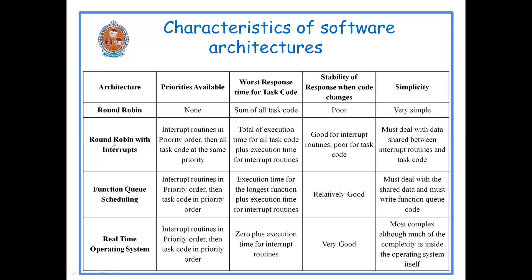In round robin with interrupts architecture, the worst case response time is the total execution time of all the task code plus the execution time for the interrupt routines. Whenever an interrupt occurs, it is a routine that must be compulsorily executed, so the interrupt routine execution time is added on top of the round robin task code time.